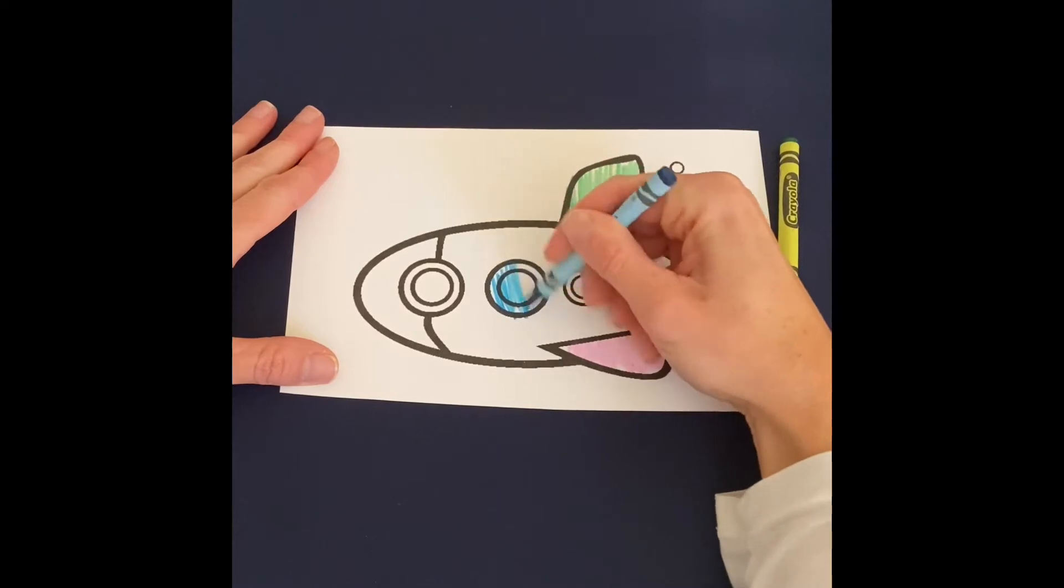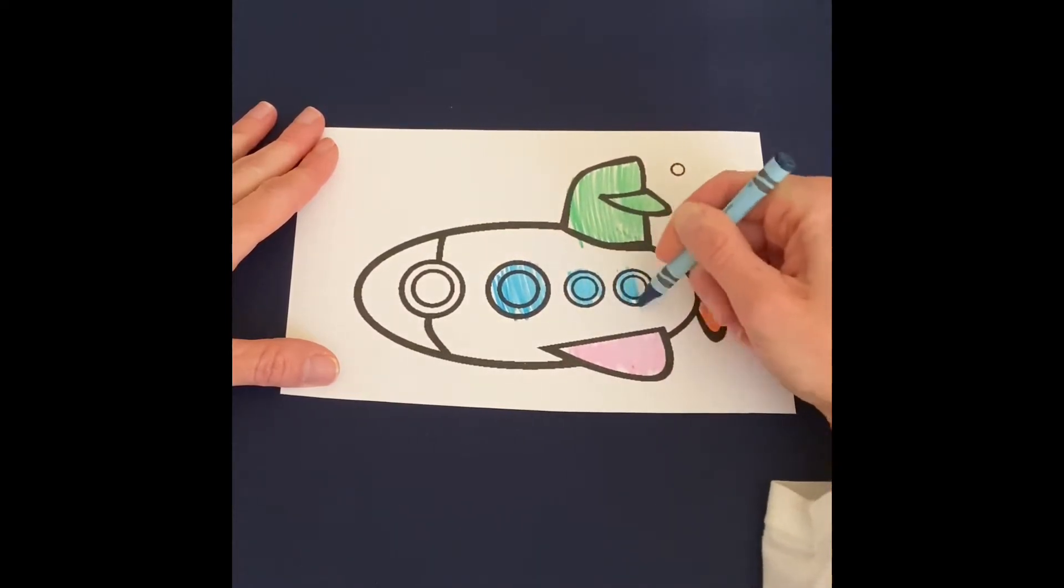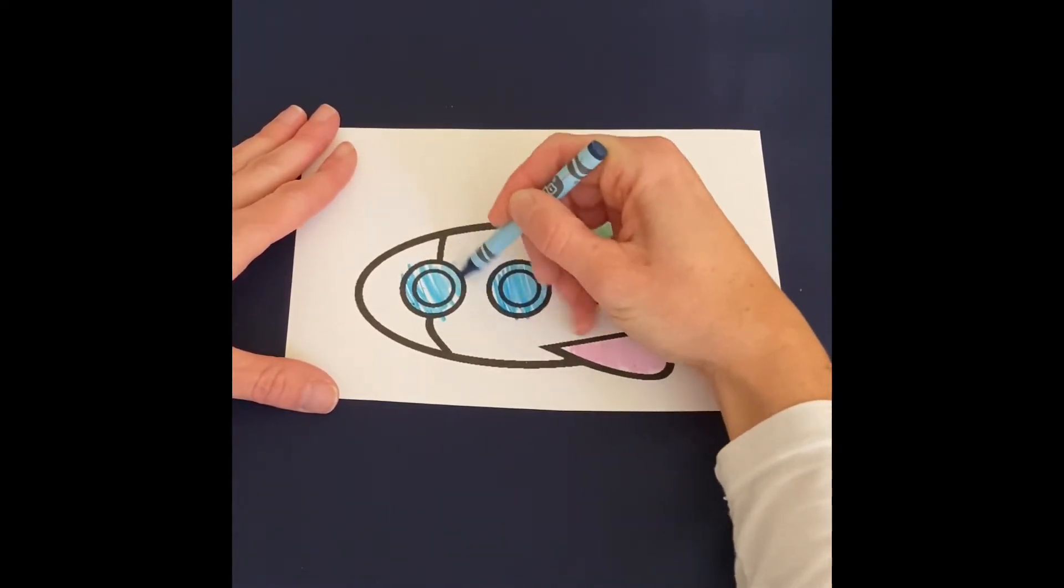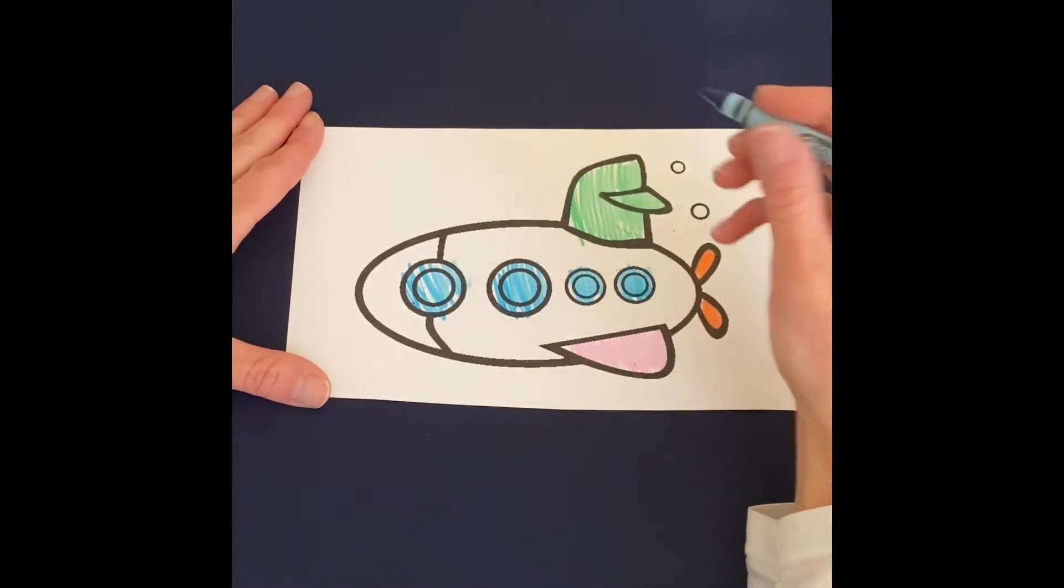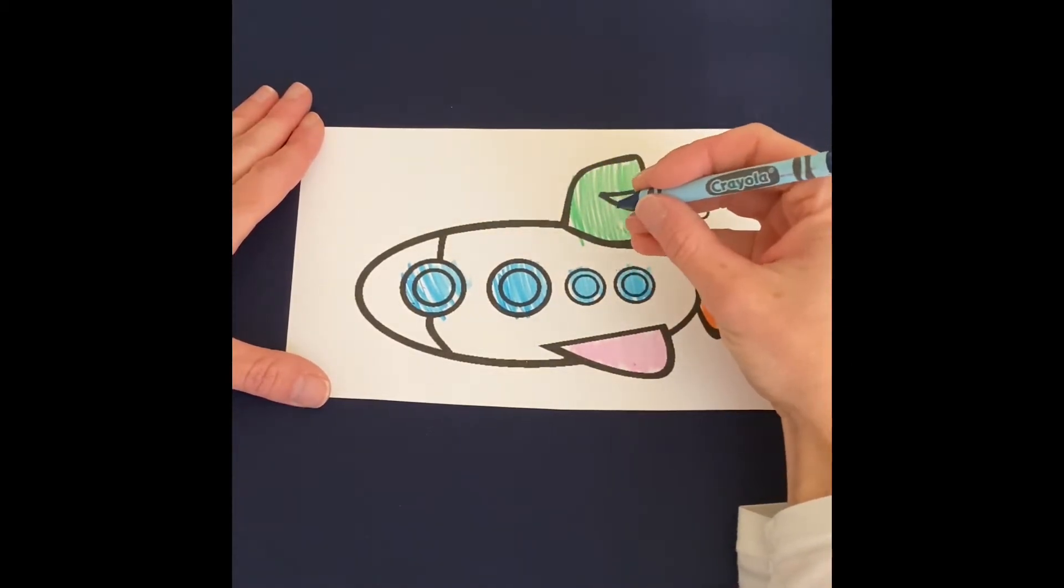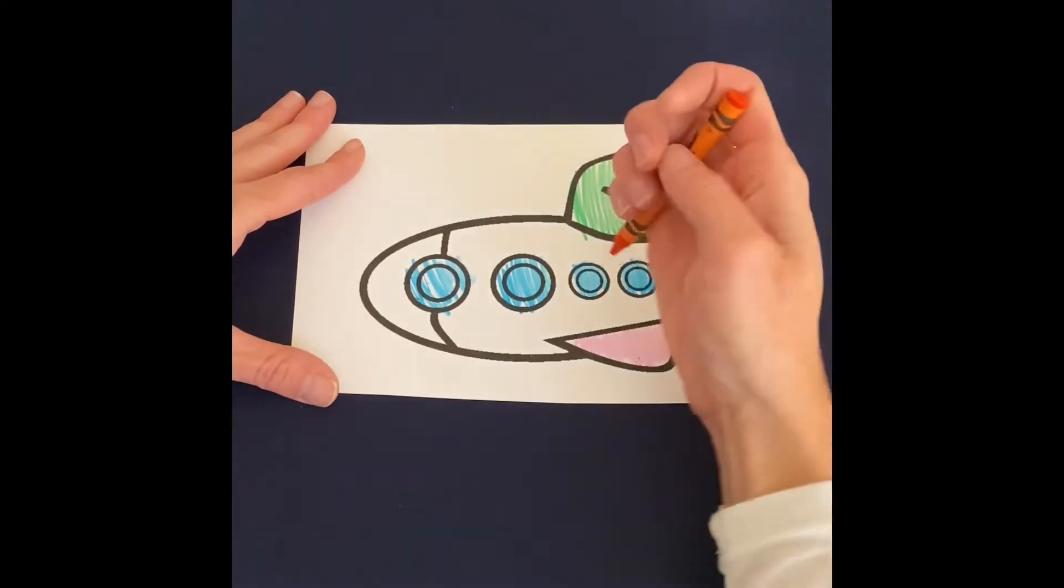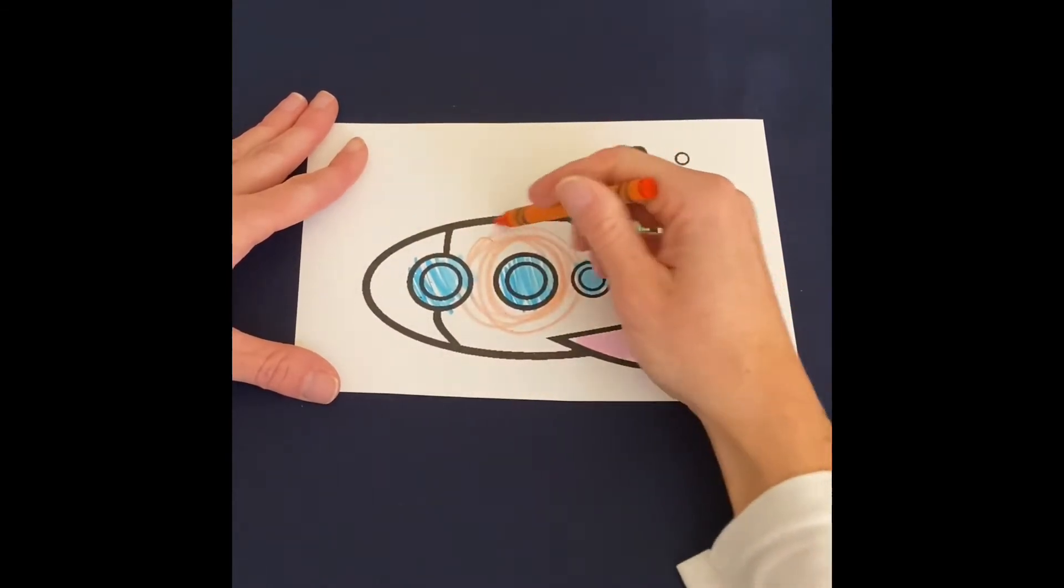If theirs looks a little more scribbly, that's totally fine and to be expected for toddlers. Most of them are probably going to still be having that whole fist grasp, but as they get a little bit older they can start moving to this. No need to rush that. If they're just grabbing it with their whole hand and they feel like they have better control that way, that's totally fine.